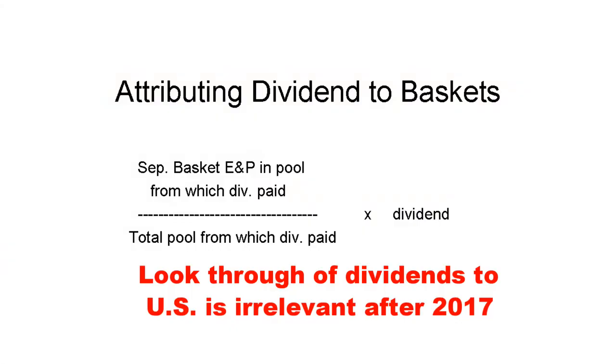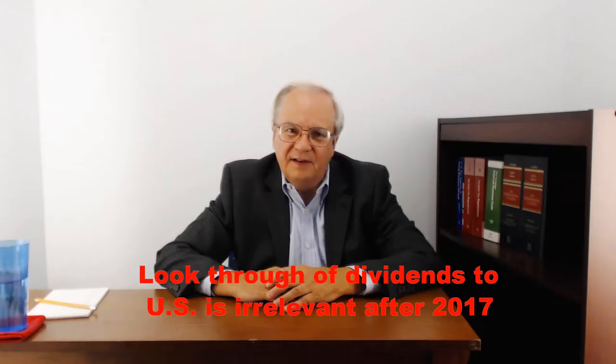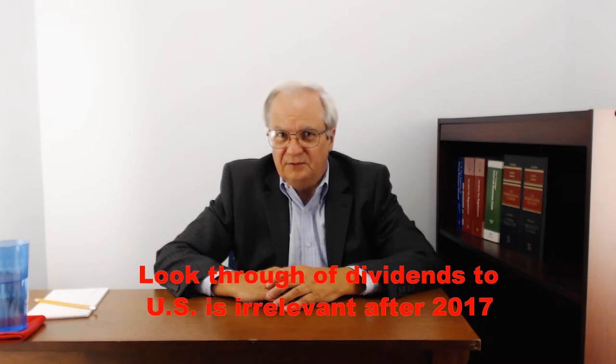There's also an anti-abuse rule related to the interaction of dividends and interest, which we won't discuss. The formula shown on the screen applies for basketizing a dividend based on E&P. This is the same formula we discussed in the prior segment under Section 902.